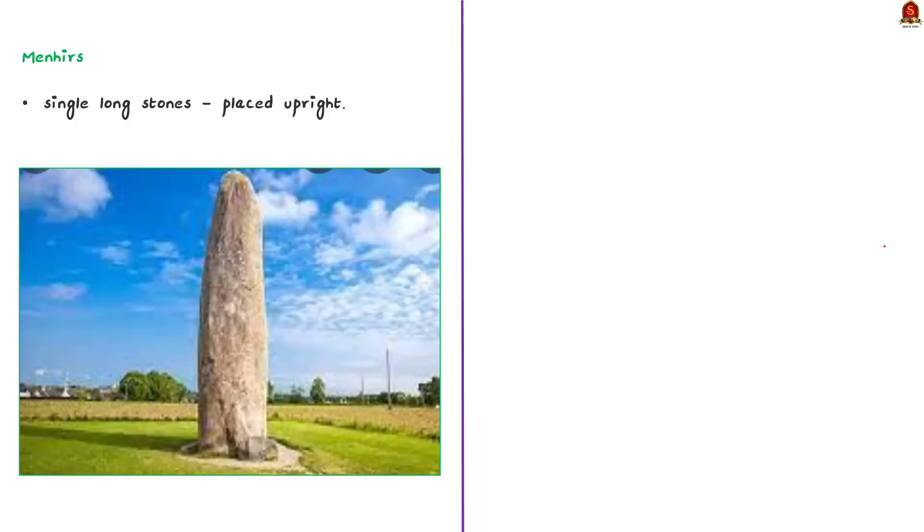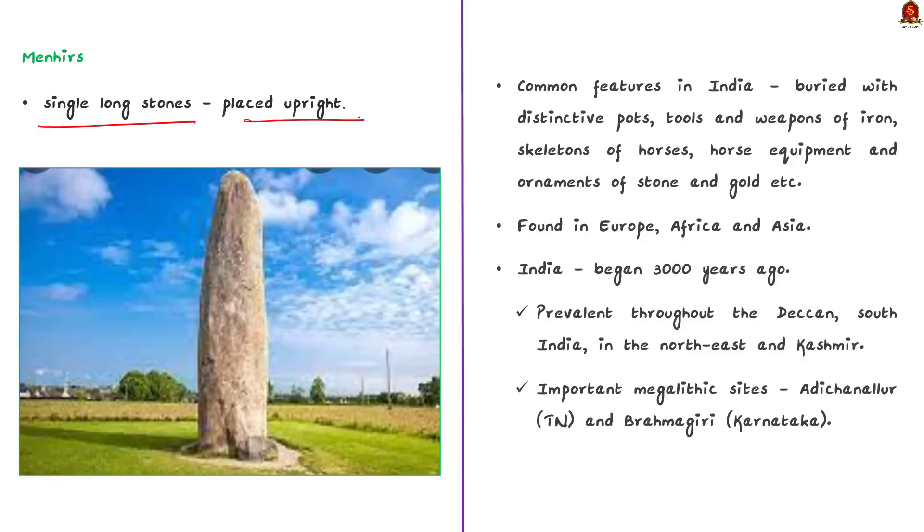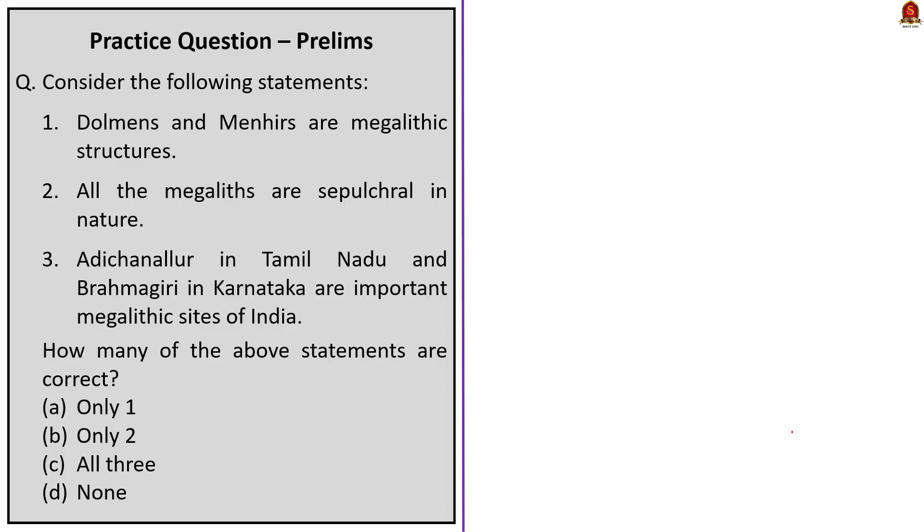Know that often these burials have some common features in India. Generally, the dead people were buried with distinctive pots, tools and weapons of iron, skeletons of horses, horse equipments and ornaments of stone and gold etc. Also, know that the Megalith culture has no regional bounds. So, it could be found in Europe, Africa and Asia. Particularly in India, it was abundant in our culture. According to NCERT, the practice of placing Megaliths began about 3000 years ago. This practice was prevalent throughout the Deccan, South India, in the Northeast and in Kashmir. Some important Megalith sites are Adichanallur in Tamil Nadu and Brahmagiri in Karnataka. So, that is all regarding this news article. Now, we will move on to the next article discussion.